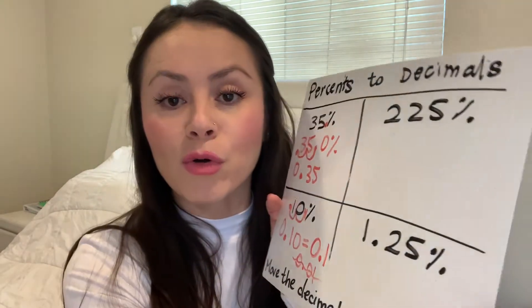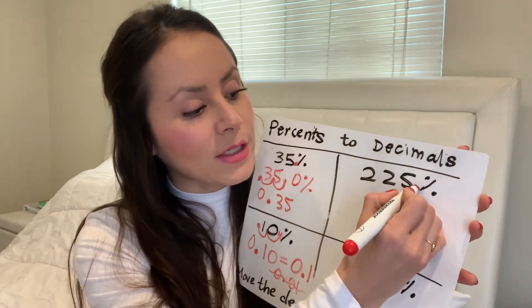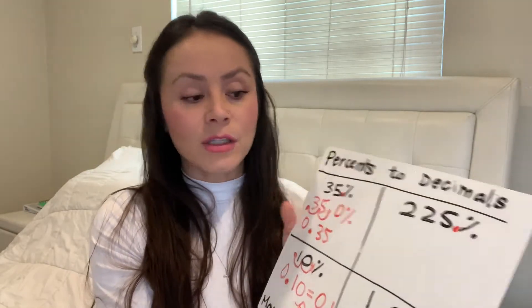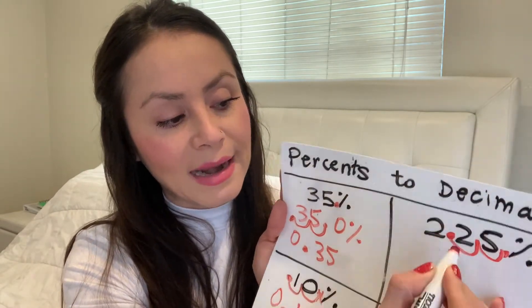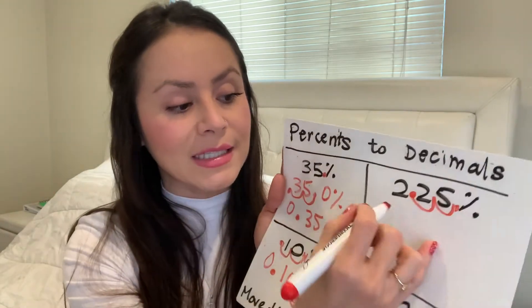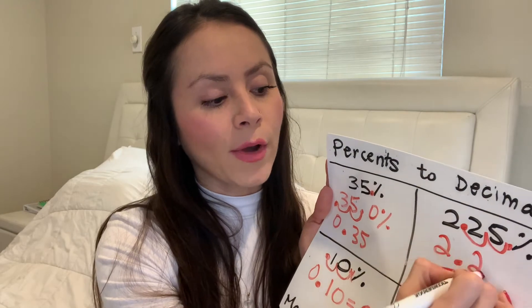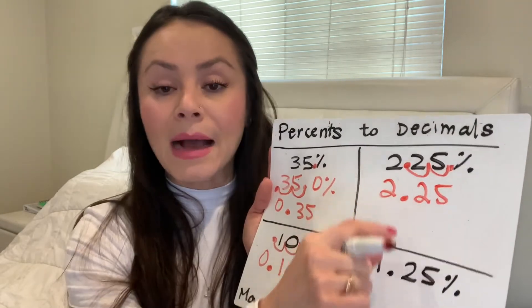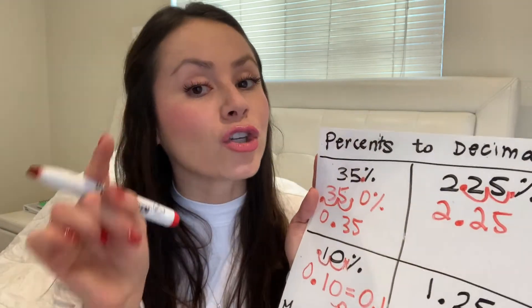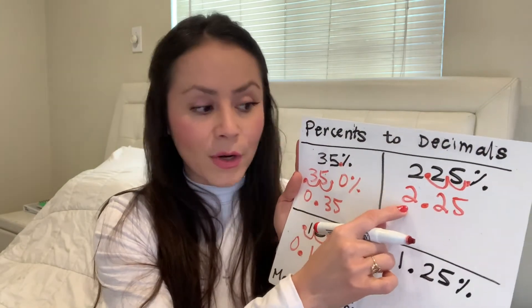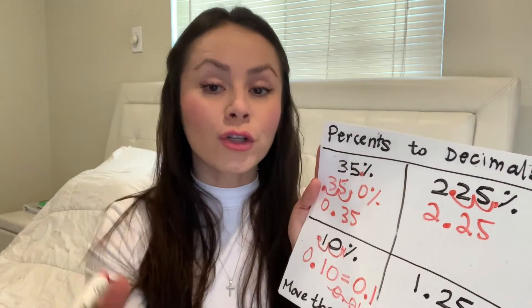Let's go to the next one: 225%. There's no decimal, so where is it invisibly? Always all the way to the back — 225. percent. We're going to move that twice to the left: jump one number, jump two numbers. It ends up here, so 225% in decimal form really means 2.25. This backs up the last problem — when I did 1.25 we moved it twice to the right and it became 125%. Remember, a whole number means 100%, so two means 200% — that's why it's 225% which really means 2.25.